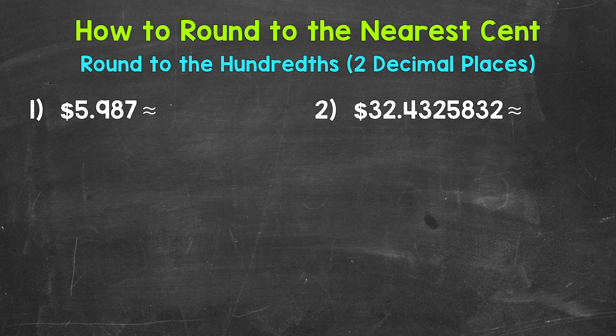Let's jump into number one and round that amount of money to the nearest cent. This decimal goes to the thousandths place, which doesn't make sense for an amount of money. So we need to round to the nearest cent, the hundredths place. We need to see if this is closer to $5.98 or $5.99. So let's take a look at the digit in the hundredths place.